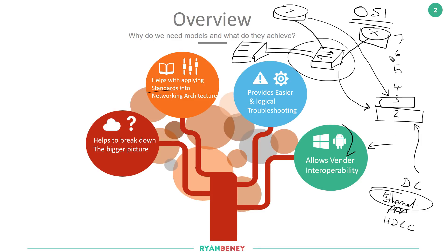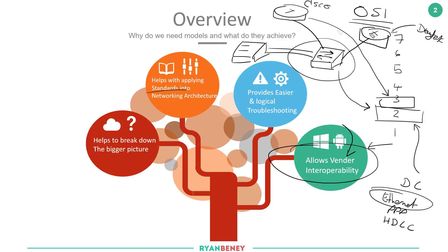Because these standards have been followed, it allows vendor interoperability — meaning, let's say this is a Cisco router and over here maybe this is something like a Draytech. Regardless of what we use at this layer, it will work through our layer two Ethernet, because we've built it against those standards.